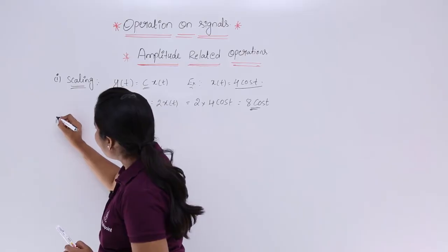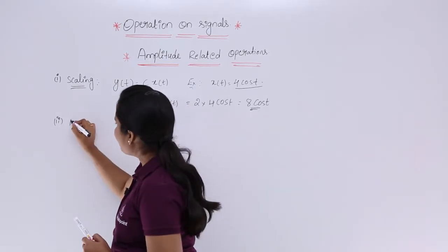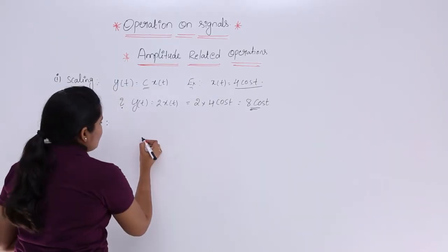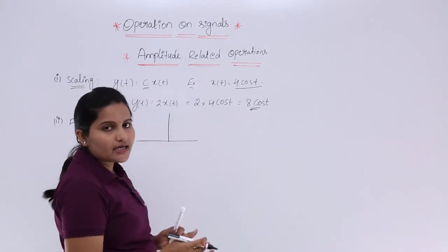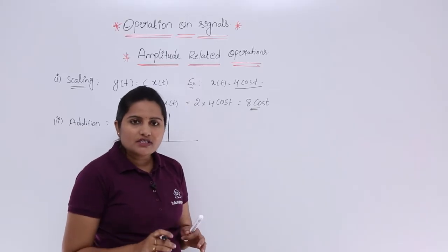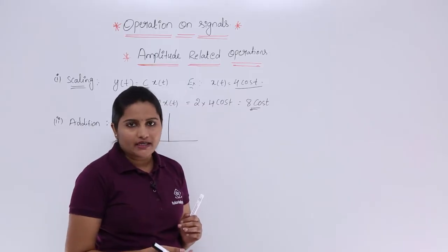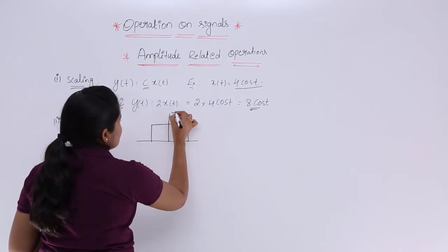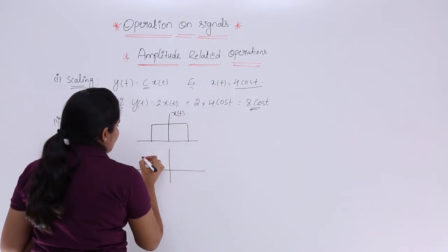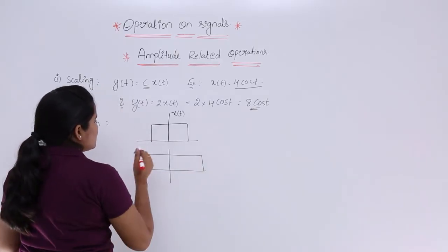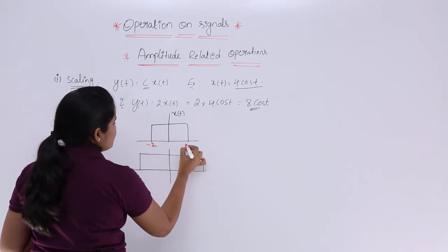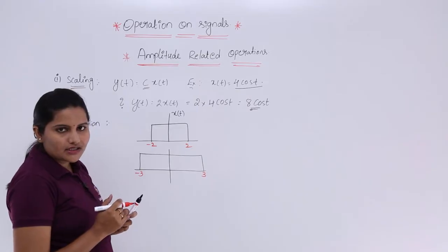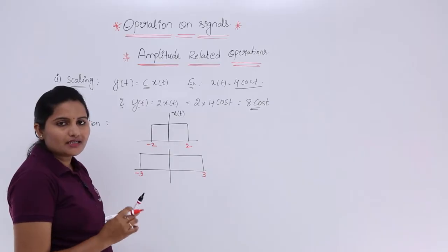The second operation we can perform is addition. To perform addition, subtraction, or multiplication, you need to consider two or more signals. Here I am considering signal x1(t) with amplitude 2 spanning from -2 to +2, and signal x2(t) with amplitude 3 spanning from -3 to 3. We will now find the addition, subtraction, and multiplication results of these two signals.